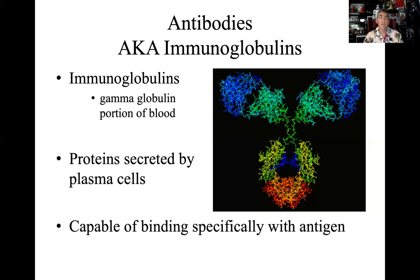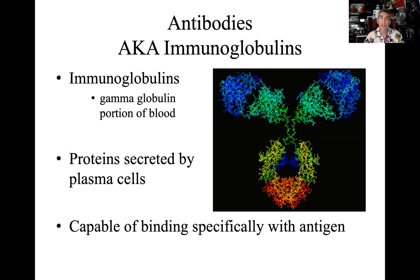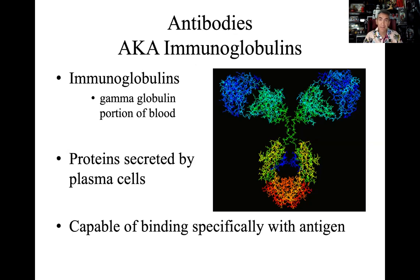This discussion is going to focus on humoral immunity — looking at the antibodies, B cells, plasma cells, and antibodies. Antibodies are also known as immunoglobulins. Immunoglobulins are a fancy way of saying an antibody. They are the gamma globulin portion of the blood — proteins in the plasma that we discussed in the blood chapter.